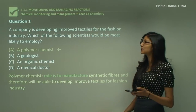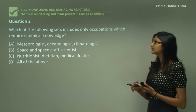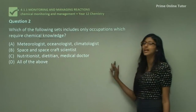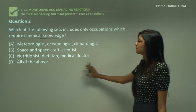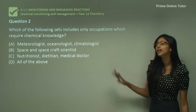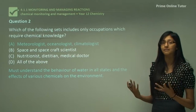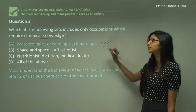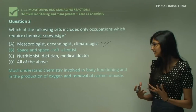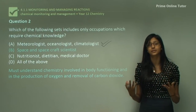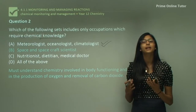Now let's look at question two, which asks us which of the following sets includes occupations that require chemical knowledge. Option A includes meteorologists, oceanologists, and climatologists. These people need knowledge about the different states of water and the effects of various chemicals in our environment, so they need chemical knowledge. Option B covers space and spacecraft scientists, who need to know about body functions and the production of oxygen and removal of carbon dioxide for astronauts in rockets.